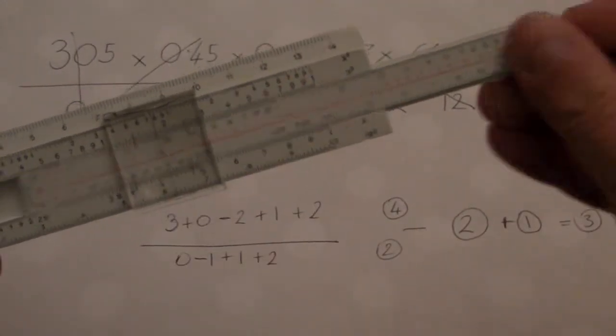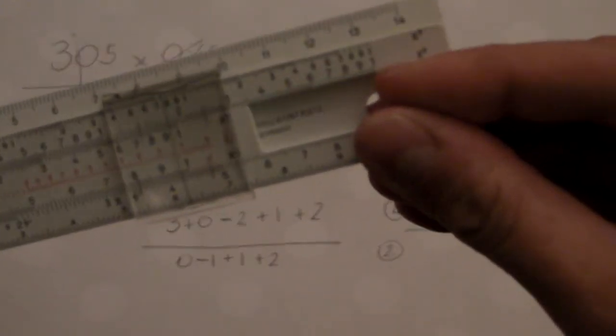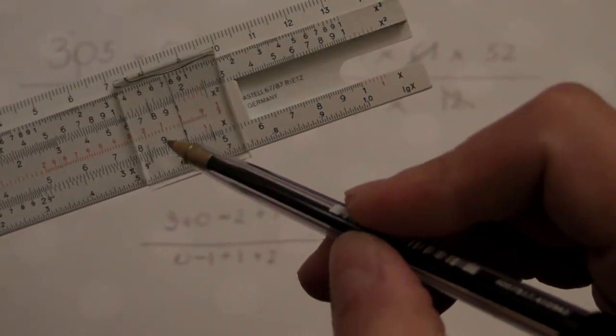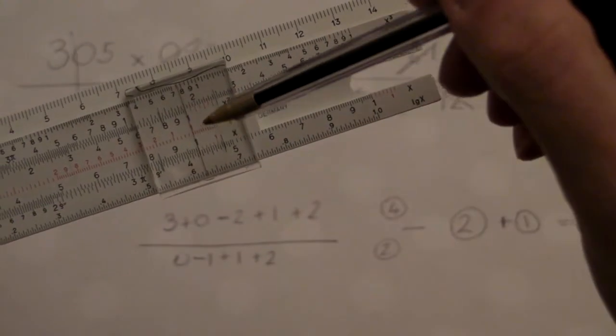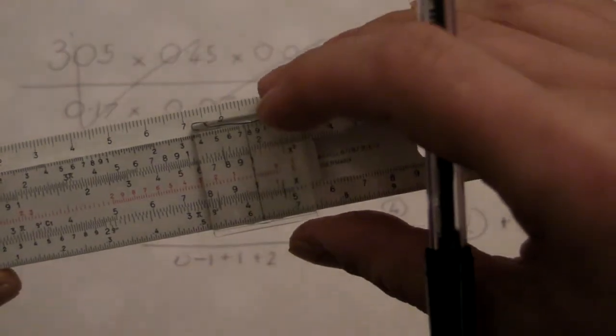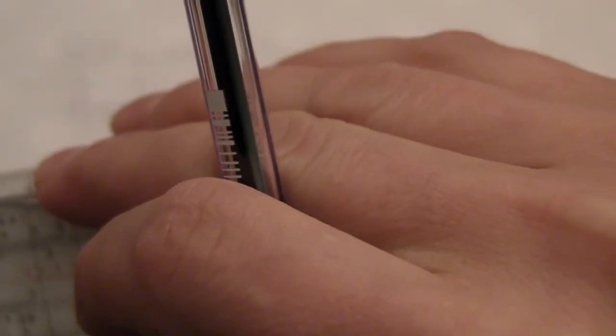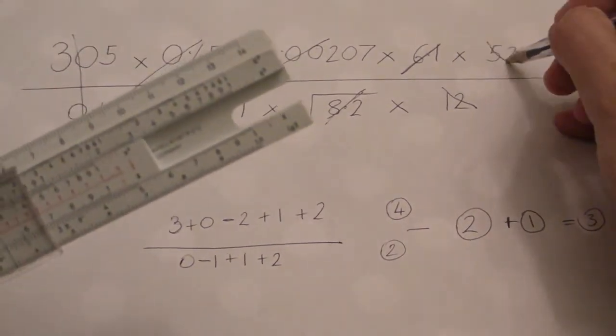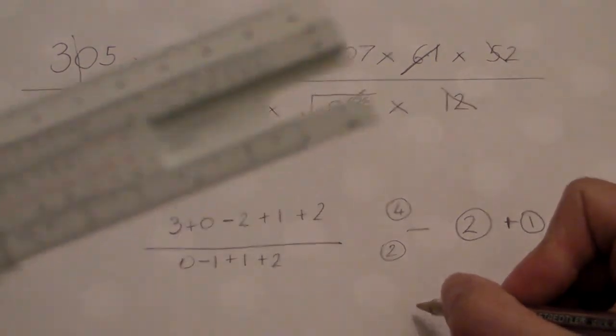So swap that 1 for this 1. Are you with me? There's our answer on the bottom. We want to carry on multiplying it. We're going to have to put the 1 there. So we can then look back to times it by 52. Okay. And then we read off our answer.